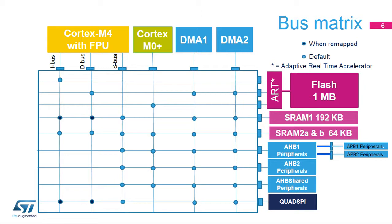SRAM2 is accessible through the IBUS and D-BUS, allowing zero wait state code execution, and through the S-BUS. The quad SPI can be read and executed through the system bus by default, and can be remapped at 0 to increase performance. The Cortex-M0 Plus also reads the flash memory through the adaptive real-time accelerator (ART), and has access to the SRAM2A and 2B memories, and the AHB1, AHB2, and AHB shared peripherals. The two DMAs can access all memories and peripherals. Different bus masters are able to access different memories and peripherals simultaneously via the bus matrix, enabling high-performance compute operations. Simultaneous master accesses to the same bus are handled via round-robin arbitration.